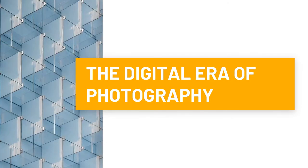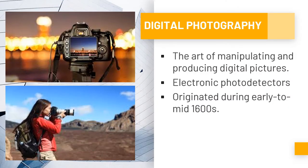Now let us talk about the digital era of photography. We will talk about how cameras evolved from the very first camera up until the types of cameras we use in the present. Digital photography is the art of manipulating and producing digital pictures. It uses electronic photo detectors to capture the image focused by the lens, and the captured image is stored as a computer file ready for digital processing, viewing, and publishing.